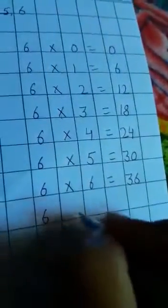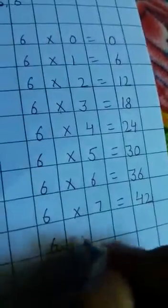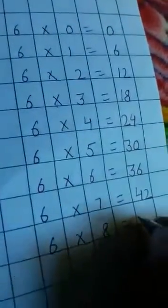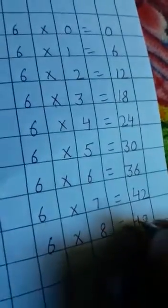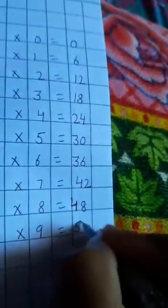6×7's are 42. 6×8's are 48. 6×9's are 54.